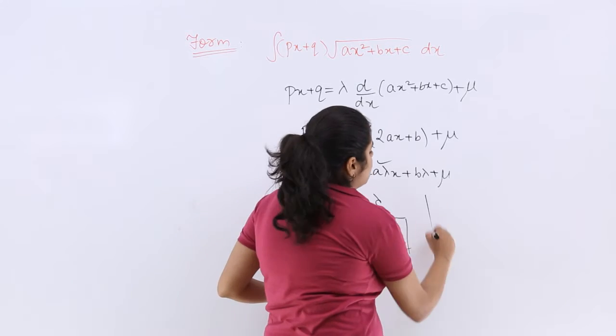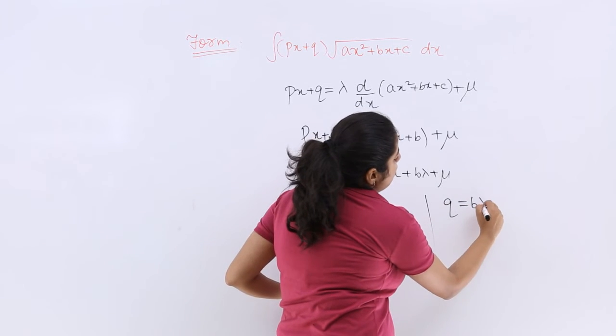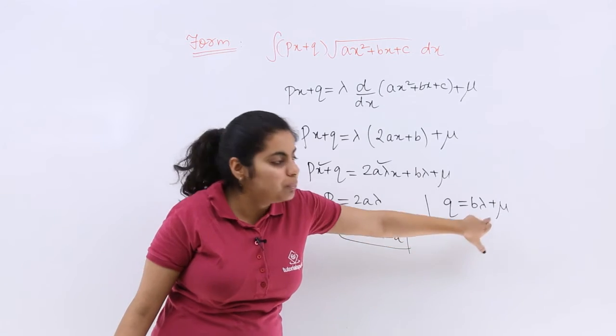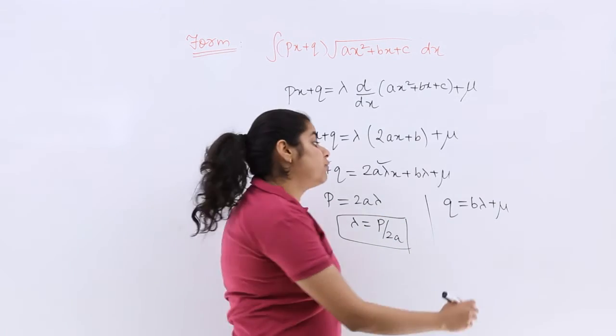And here what you will do: b lambda plus mu is a constant. Q is a constant. So Q is equal to b lambda plus mu. Lambda's value you will put and find out the value of mu.